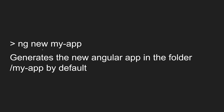The first command is 'ng new my-app'. Here, 'ng' is the Angular CLI command, 'new' means creating a new application, and 'my-app' is the name of the application. A new folder will be created with the name 'my-app' and the application will be created inside that folder.